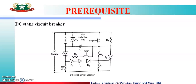Also, if an overload occurs, the voltage drop across R1 causes the diode string D1, D2, and D3 to become forward biased, allowing current to flow through to the gate of T2. As T2 receives gate current due to overload, T2 turns ON and turns OFF T1 by connecting the capacitor polarity across T1. With T1 OFF, the circuit breaks because it is connected in series with the load. This is the working of the DC static circuit breaker.